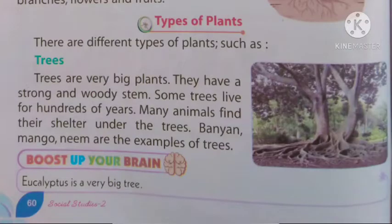आइए अब types of plants के बारे में जानते हैं। पौधे बहुत तरीके के होते हैं। There are different types of plants such as trees. हमारे आसपास बहुत तरीके के, विभिन्न प्रकार के पौधे हैं जैसे trees जिनको वृक्ष कहते हैं। Trees are very big plants. जो trees होते हैं वो बहुत बड़े होते हैं। उनके जो तना होते हैं वो बहुत ही मजबूत और लकड़ी का होता है।